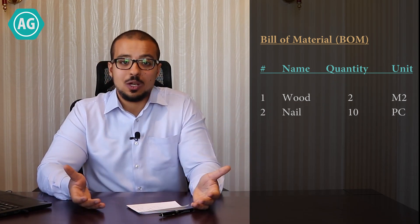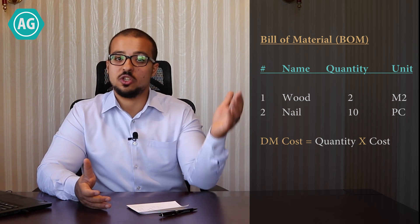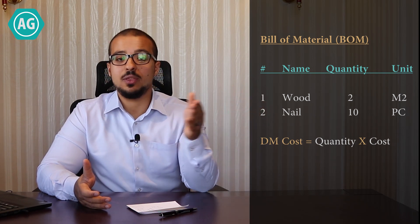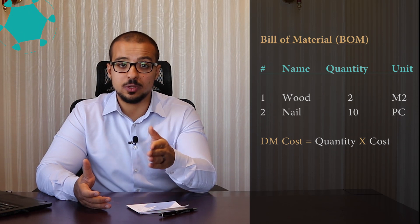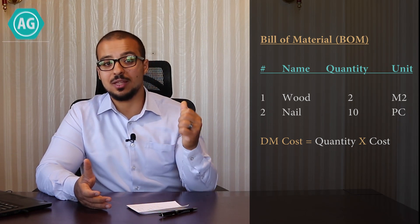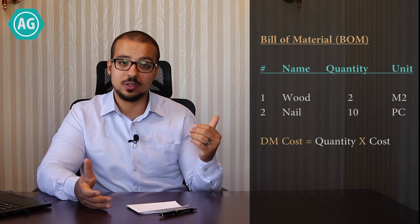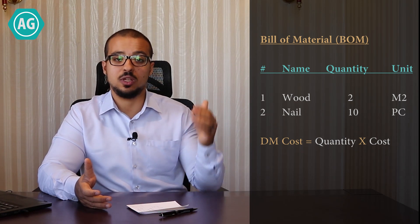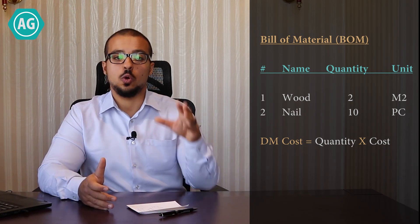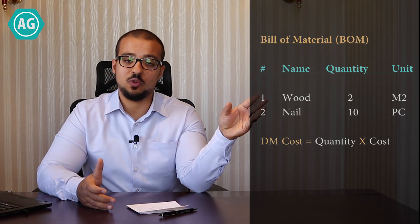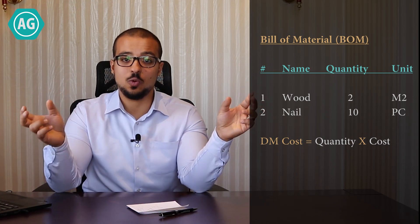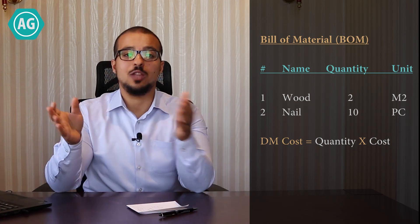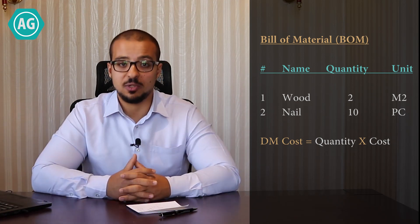It is very easy to calculate the cost after this. We just multiply the quantity from the bill of material by the cost of the components. I have already explained how to calculate the cost of components in the other playlist for product costing for purchased items. We multiply the BOM quantity by the cost of every component and we get the direct material cost.